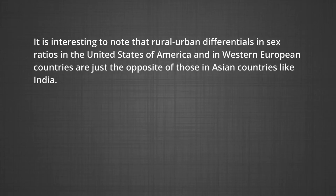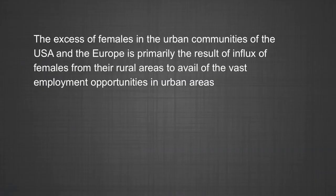An analysis of differences in sex composition of rural and urban areas in different countries shows that the migration stream does not produce similar results. Rural-urban differentials in sex ratio in the USA and Western European countries are just the opposite of those in Asian countries like India. In Western countries, males outnumber females in rural areas and females outnumber males in urban areas. In countries like India, the reverse is the case. The excess of females in urban communities of the USA and European countries is primarily the result of influx of females from rural areas to avail of vast employment opportunities. By contrast, the sex ratio in Asian cities, particularly India, remains male-dominant due to predominance of male migration.